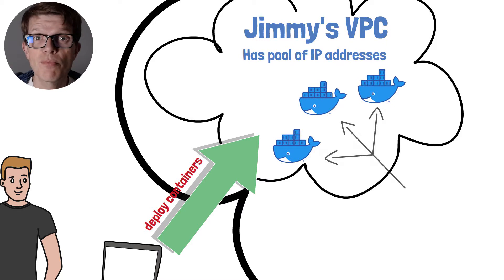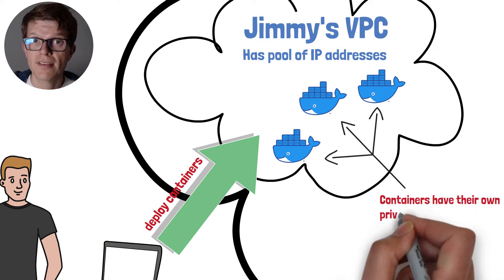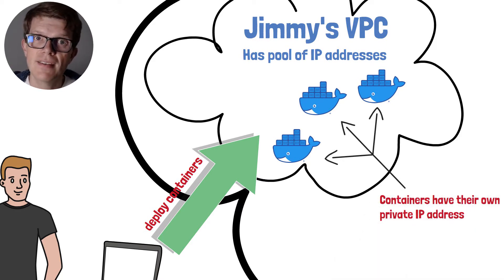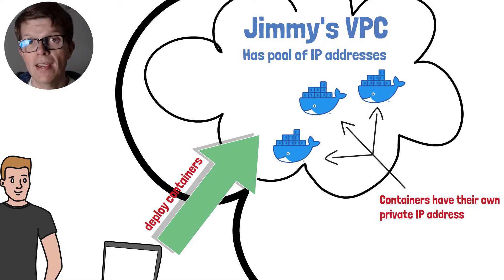Containers will need their own private IP address because they need to be called by other services. Your VPC, when you create it, will need to be provided with a pool of IP addresses that it can use to create containers or EC2 instances. We're going to get into how to set that up using the default VPC provided by AWS. But first, let's talk about subnets.